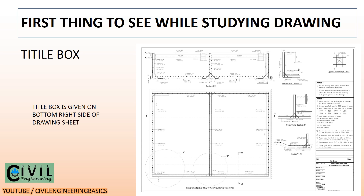Let's start by discussing the title box. The title box should be the first thing which is seen before moving on directly to the drawing. The title box is given on the bottom right side of the drawing sheet. As you can see, this is the underground water tank reinforcement details drawing and on the bottom right corner there is a title box. We will also discuss why the title box is so important in any drawing.